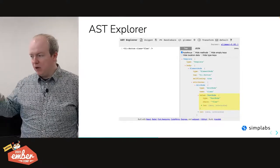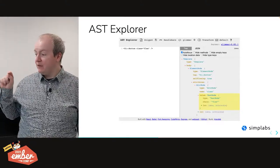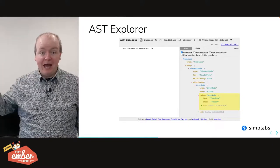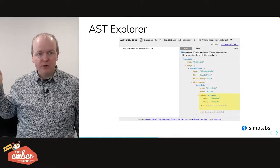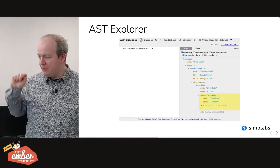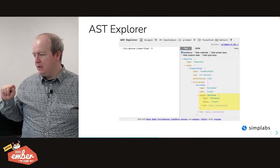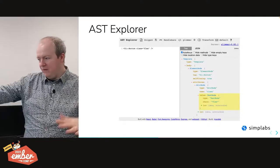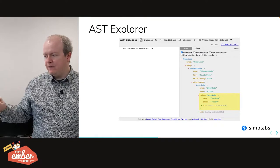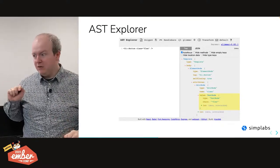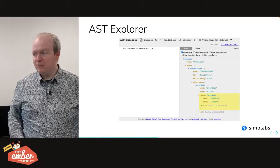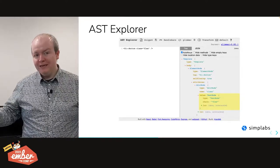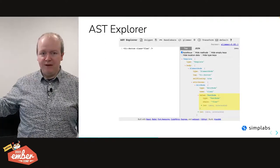One of the best tricks of AST Explorer is that you can just click the bit that you care about in your code on the left-hand side, and it highlights the corresponding bit in the AST representation. I've clicked on flex in the class, and you'll see on the right-hand side that we're inside an element node. That element node has an array of attributes, and those attributes have a particular attribute node that is named class and has a value of flex. So hopefully you can see that on the right-hand side. That's all we need to find that class equals flex with our lint rule.